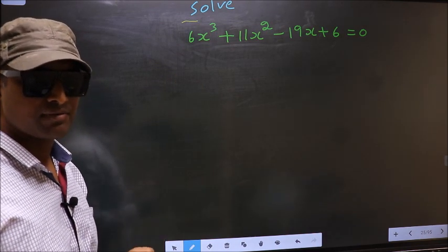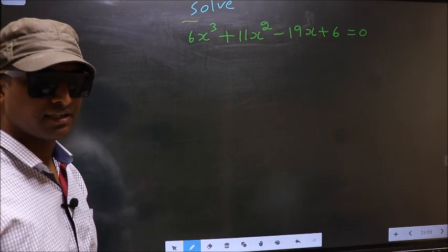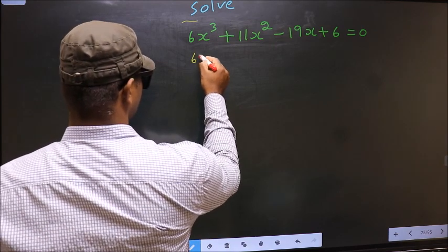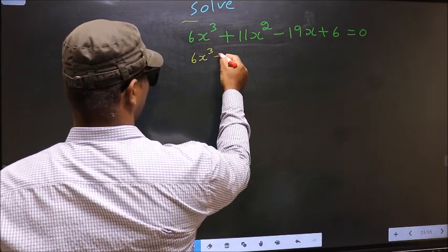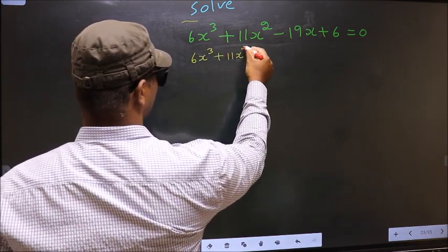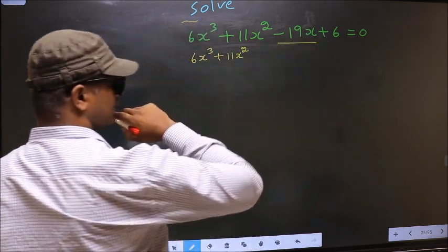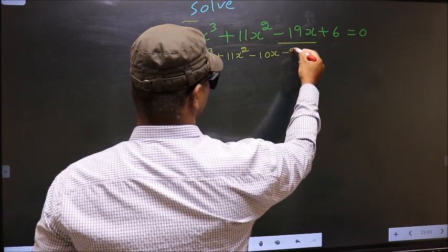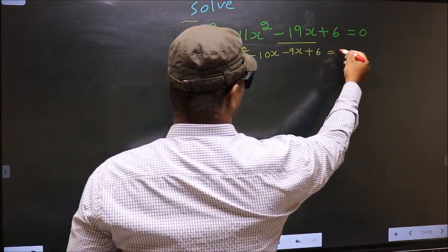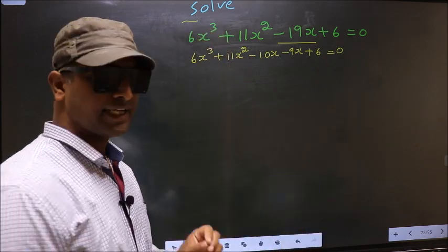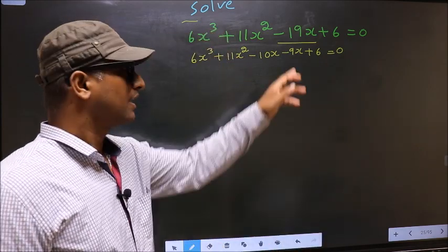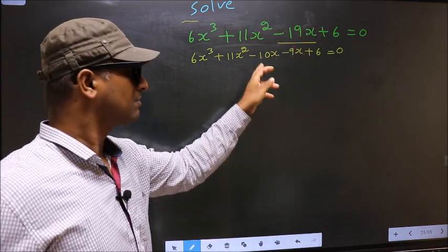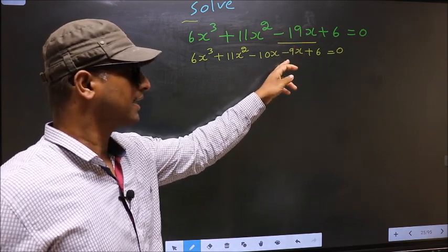For that, we have to change the x term. In place of minus 19x, I write minus 10x minus 9x. So the equation becomes 6x cube plus 11x square minus 10x minus 9x plus 6 equal to 0.